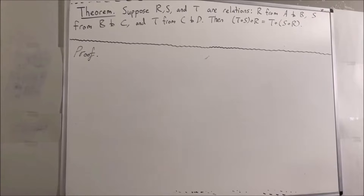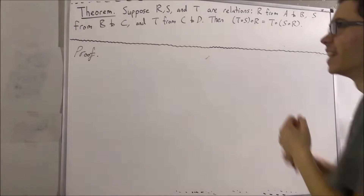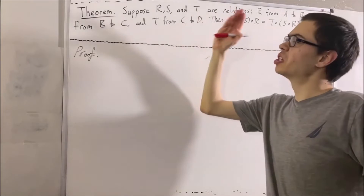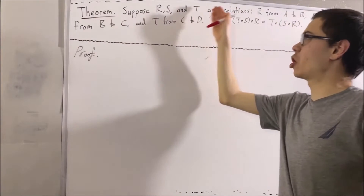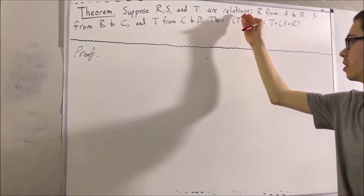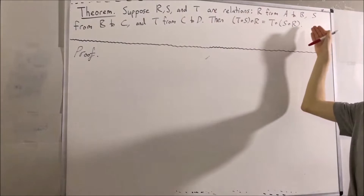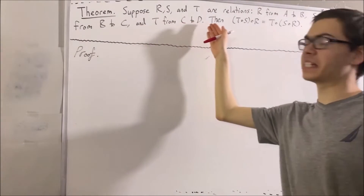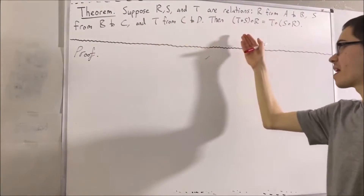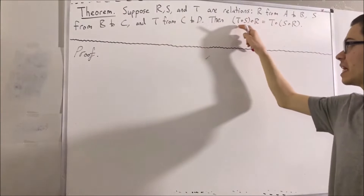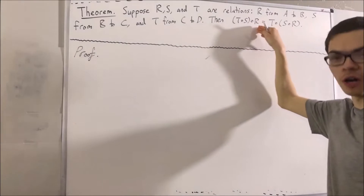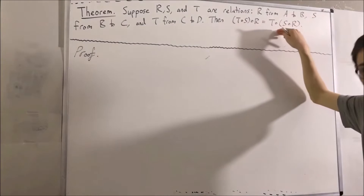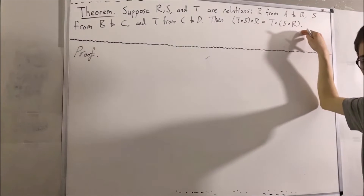Hello. In this video, we are going to prove the following theorem. Suppose r, s, and t are relations — r from A to B, s from B to C, and t from C to D. Then, (t ∘ s) ∘ r is equal to t ∘ (s ∘ r).